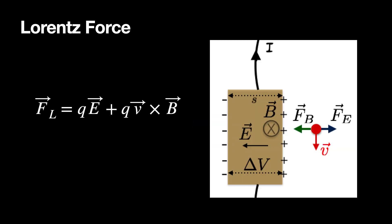This is the Lorentz force. If you have a charge moving in both an electric and a magnetic field — for example, in a Hall effect probe — then there's an electric force and a magnetic force. The magnetic force depends on the velocity and the magnetic field. It's still something I can calculate, even if it deals with cross-products.